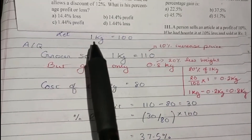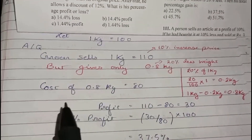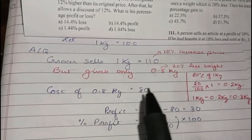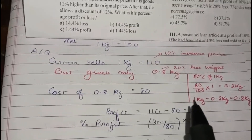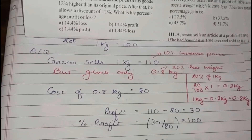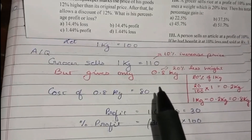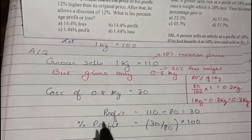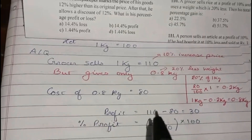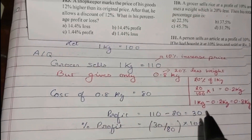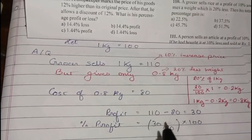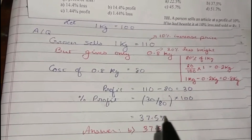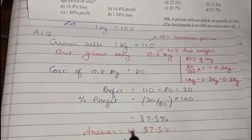Since the cost of 1 kg is 100 rupees, the cost of 0.8 kg is 80 rupees. The grocer was selling 0.8 kg (costing 80 rupees) at a price of 110 rupees. The profit earned is 110 minus 80 equals 30. The percentage profit is 30 divided by 80 into 100, which gives 37.5%. Hence option B is the right answer.